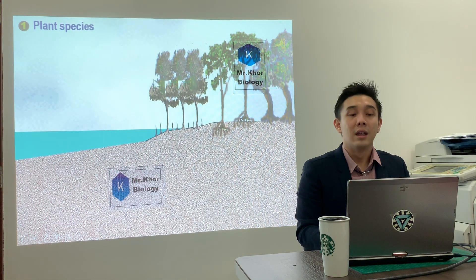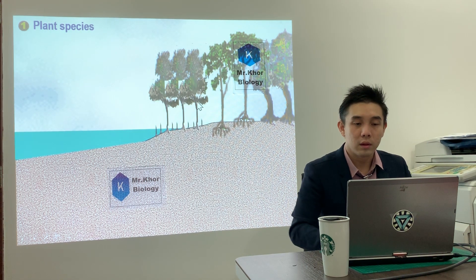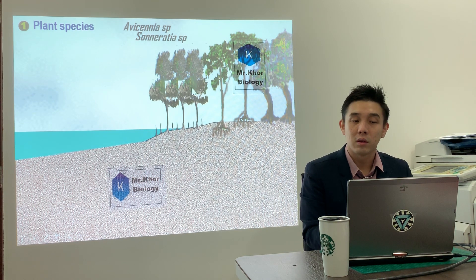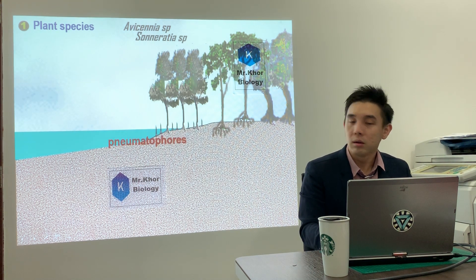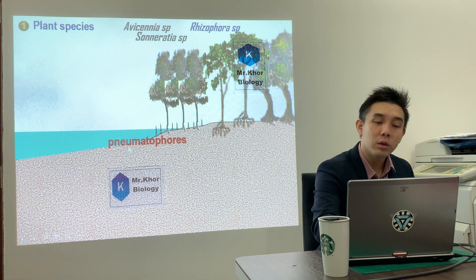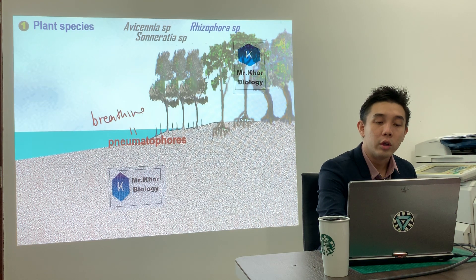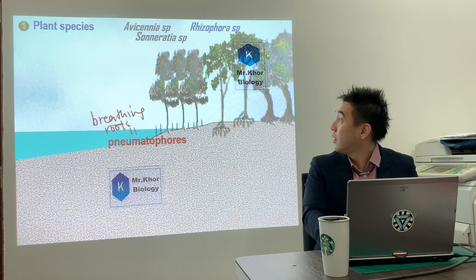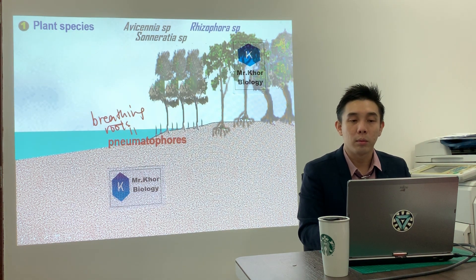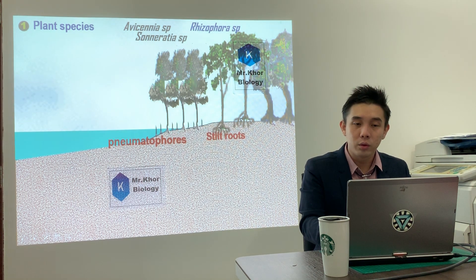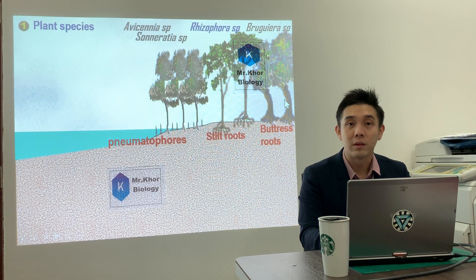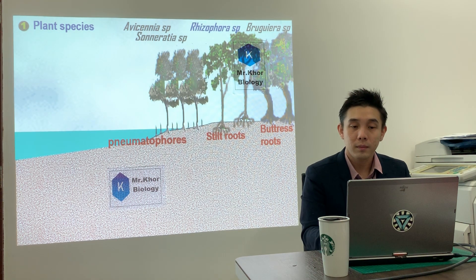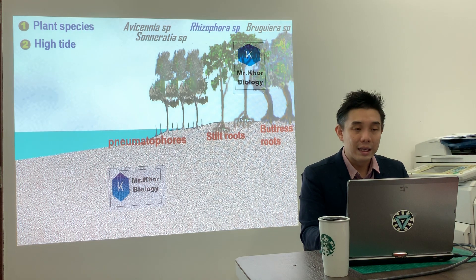Let's begin. Mangrove swamp succession — first point: we start with plant species nearest to the shore. These are Avicennia sonarathia. They have pneumatophores, which are breathing roots. Next are Rhizophora, which have stilt roots. Finally, Bruguiera — they have buttress roots. We start with plant species first.